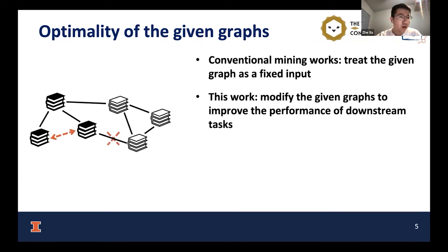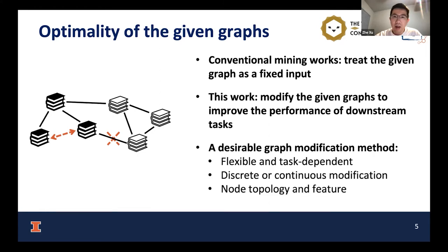For example, in the left-hand figure showing a node classification task, if we want to improve node classification performance, we might want to add a link between two black nodes and delete a link between black nodes and white nodes. We claim that our desirable graph modification method should be highly flexible, independent of any specific downstream task, and should support discrete or continuous modification towards different modalities of the graph, such as the node topology and the node features.